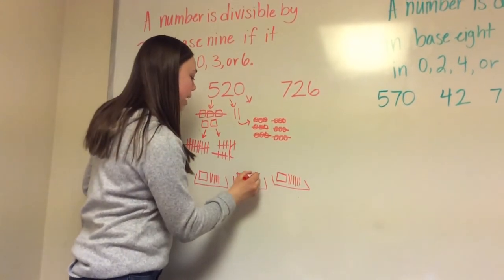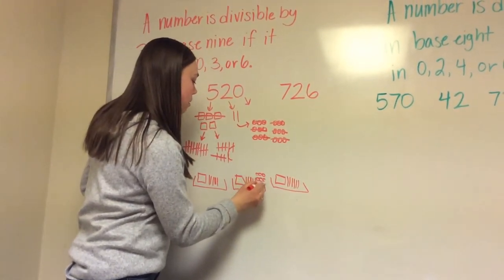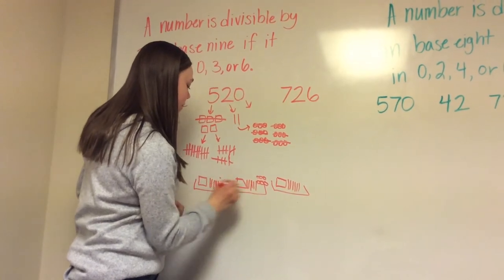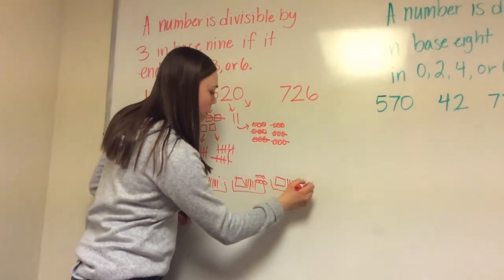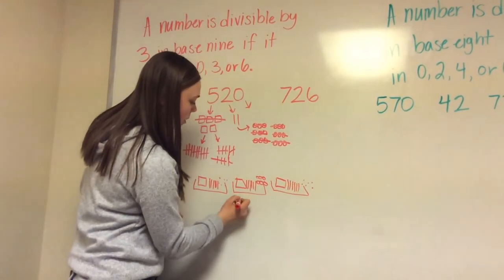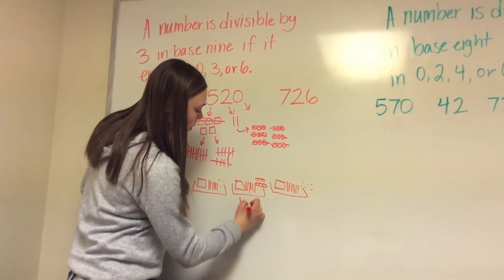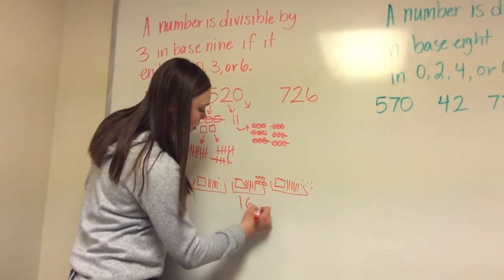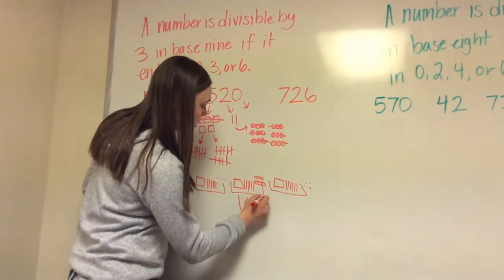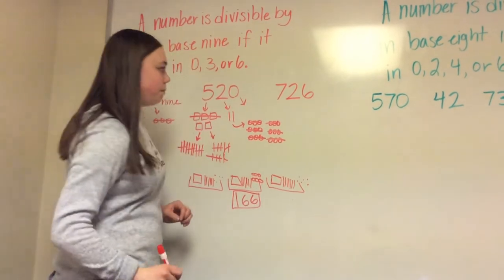So each group will get six singles, and we'll do the same here. We know that we have a total of one flat, six rods, and six singles.